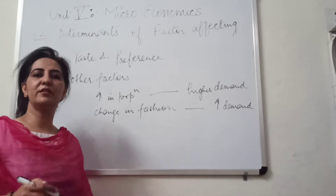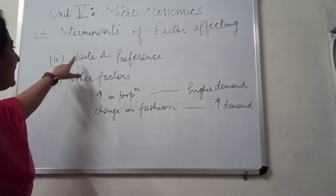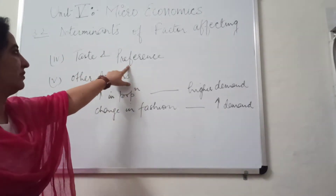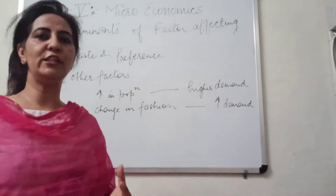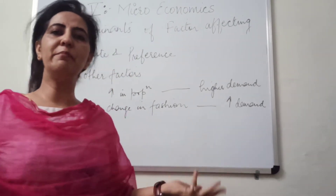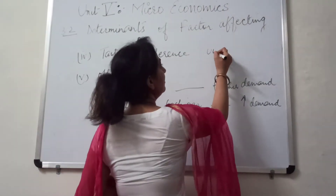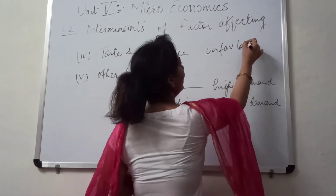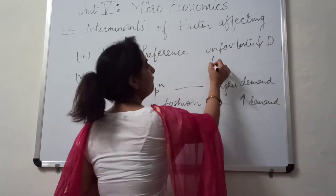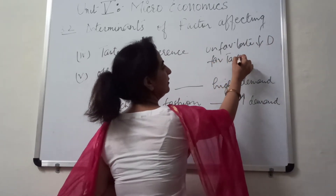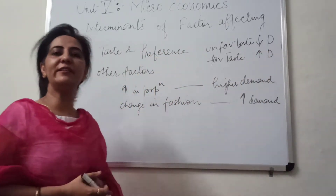We have discussed three points already. The fourth factor is taste and preference. If a person has a favorable taste for any product, he will demand more. Unfavorable taste leads to a reduction in demand, and favorable taste leads to an increase in demand.